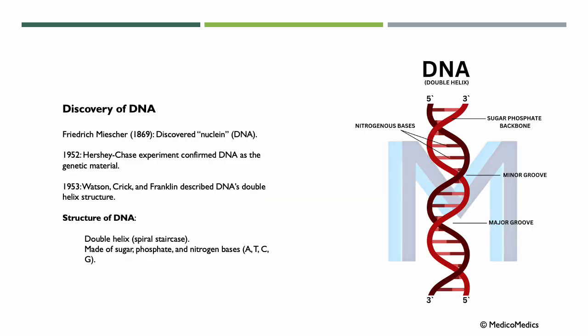With the discovery of DNA, everything accelerated. Friedrich, in 1869, discovered the nuclein — later known as DNA — in white blood cells. In 1952, the Hershey-Chase experiment proved DNA, not proteins, is the genetic material, using viruses and radioactive labeling. In 1953, Watson, Crick, and Franklin used X-ray diffraction to describe the DNA double helix structure.